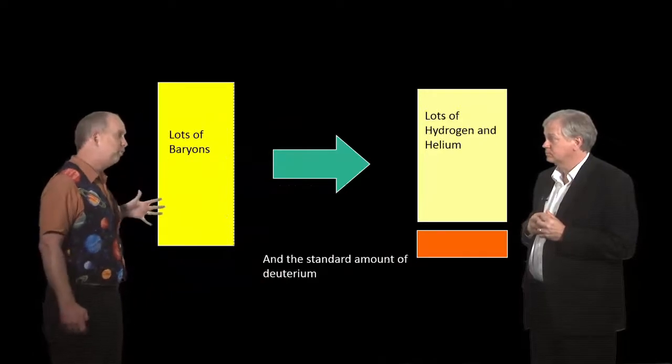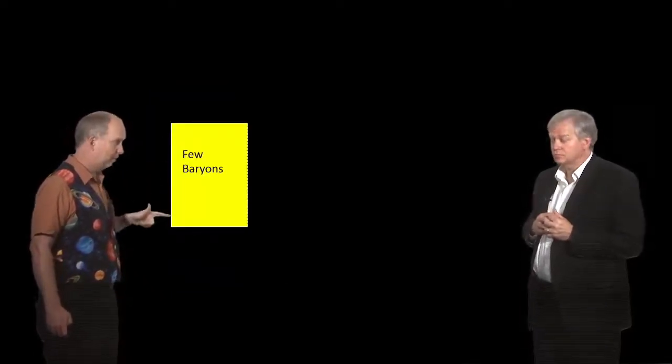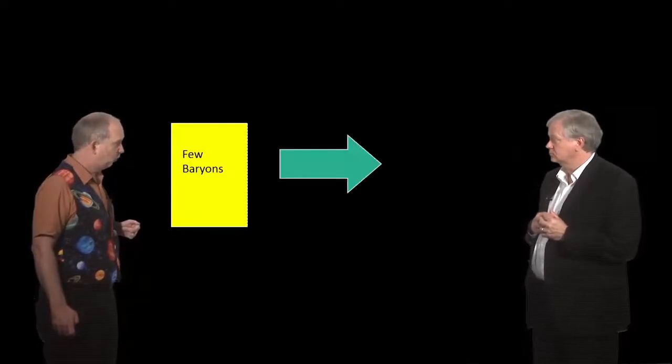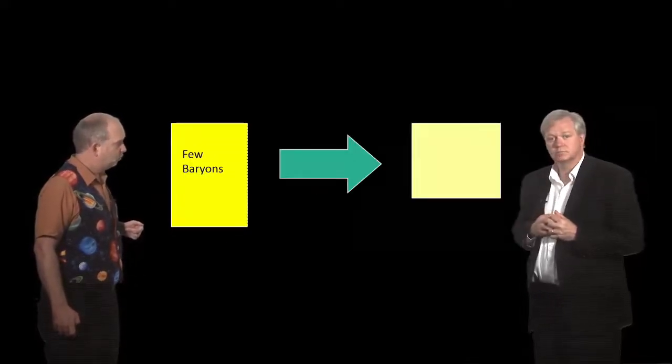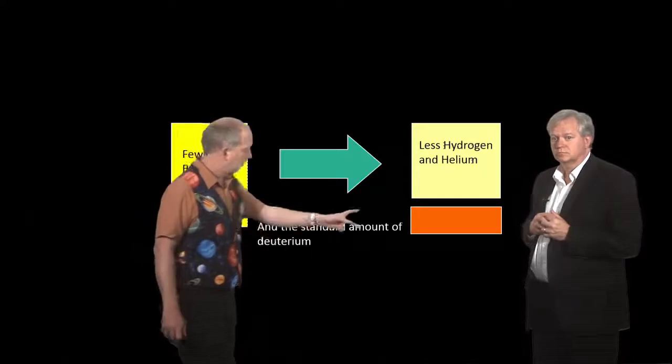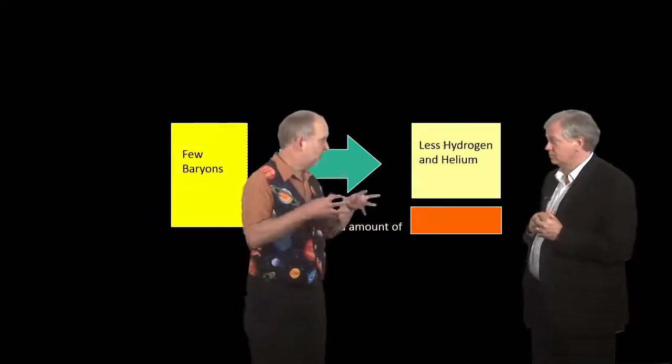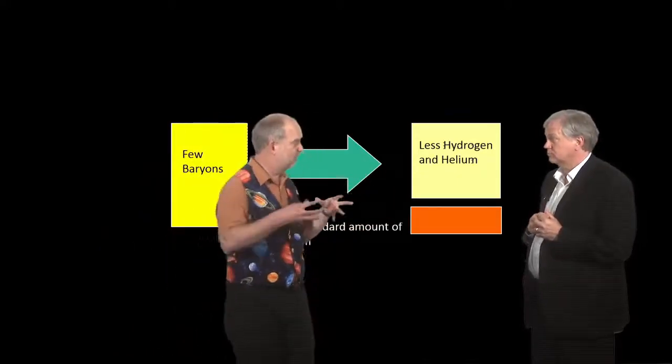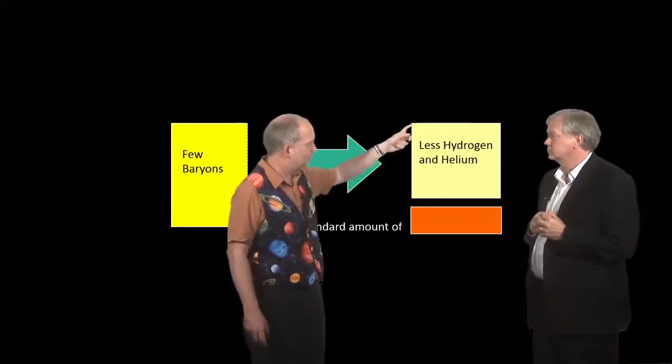But let's imagine instead you had fewer baryons to begin with, so you're now talking about a smaller number of baryons. Once again it's going to go through the action and it's going to turn into exactly the same amount of deuterium, which is as much deuterium as you can get away with but it's just spread out enough so it can't destroy itself. But there's now going to be less left over.